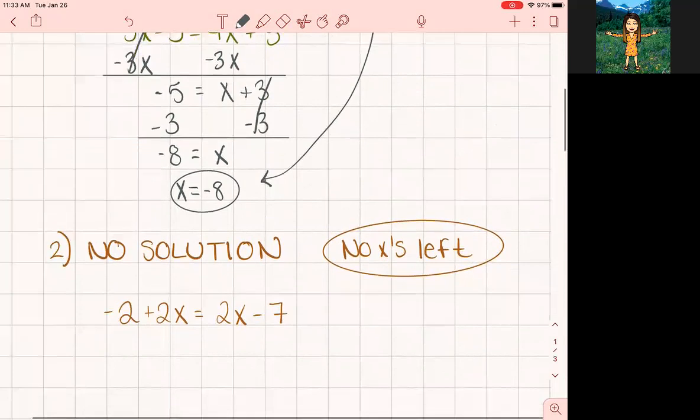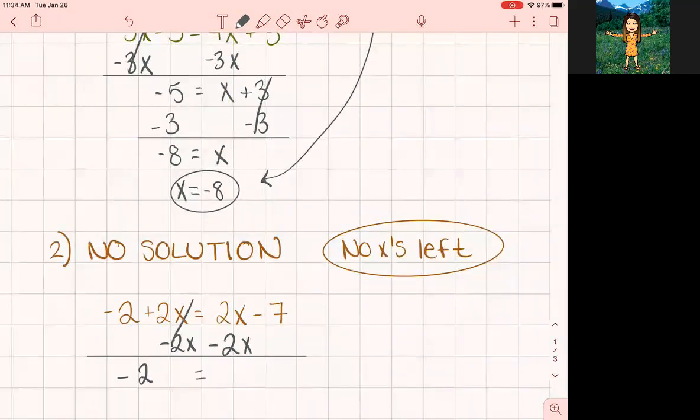Okay, so if I subtract 2x from this side, you subtract 2x from that side, you have negative 2, that's gone, that's gone, and you get negative 7. So we stop solving there because there are no variables left. It doesn't mean you did anything wrong. It just means that there are no answers. There are no solutions to that equation.